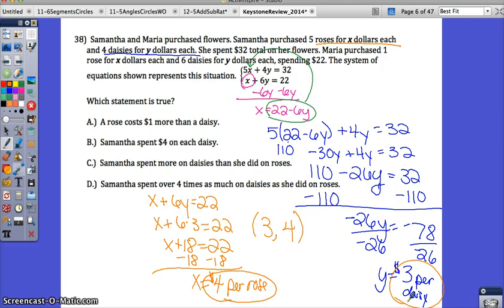Now let's see which one of these statements is true. A rose costs one more than a daisy. Well, that is true. Four is one more than three. So this will work. But let's see if any of the other ones work. Samantha spent $4 on each daisy. No, $3 on each daisy. It's $4 on each rose. Samantha spent more on daisies than she did on roses. Well, Samantha's this first equation. Her roses cost 5 times 4, which is 20. Her daisies cost 12, or 4 times 3. Samantha actually spent more on roses, so that's not true. And Samantha spent over 4 times as much on daisies as she did on roses. Again, not true. So your correct answer is A.